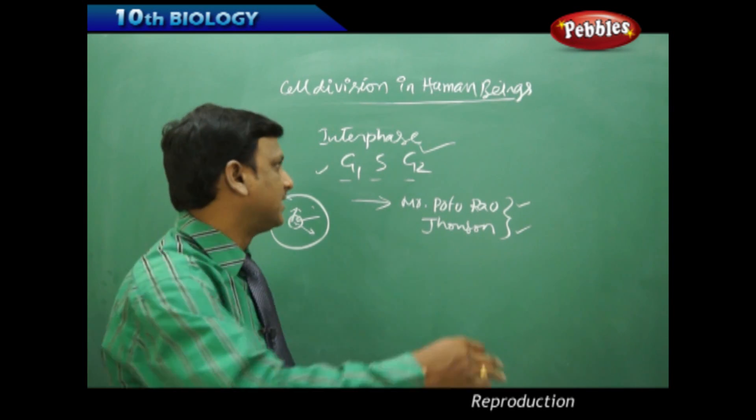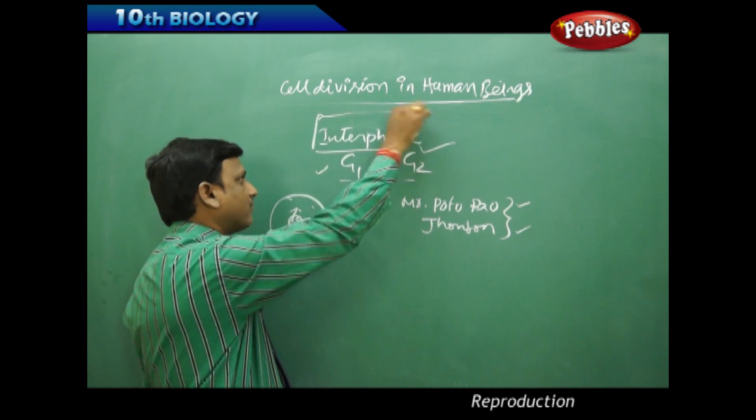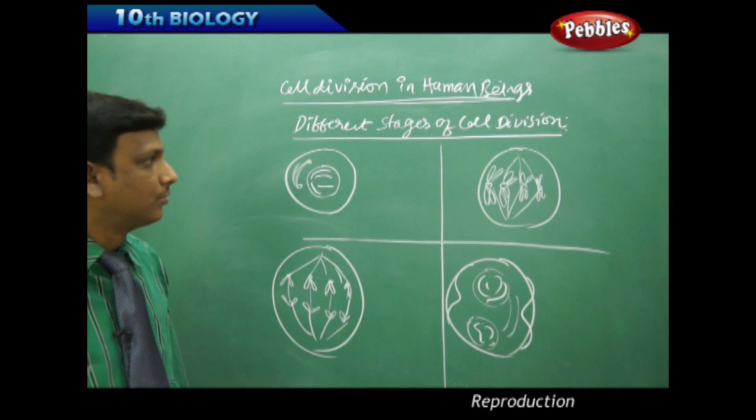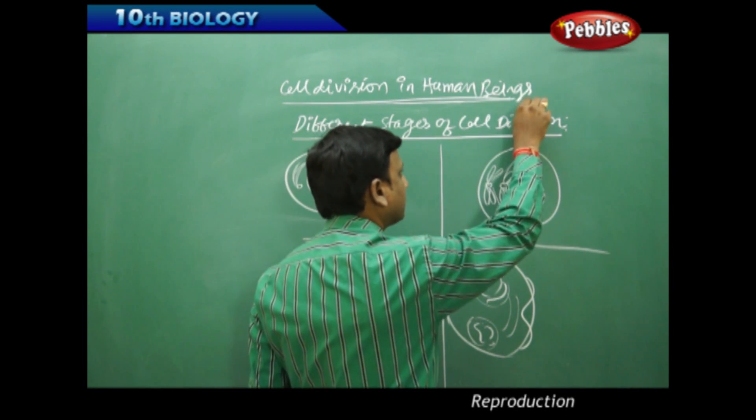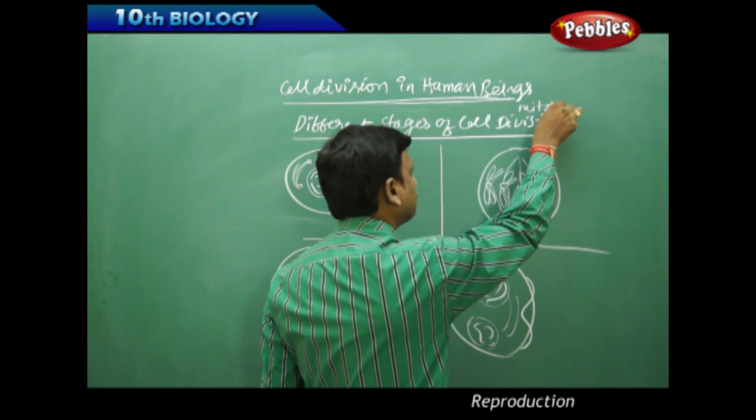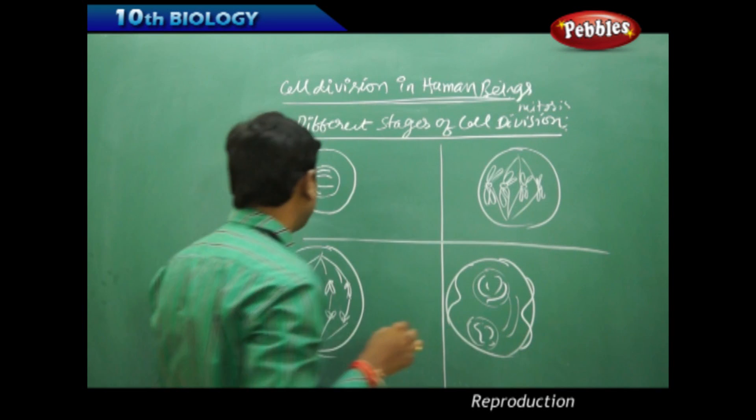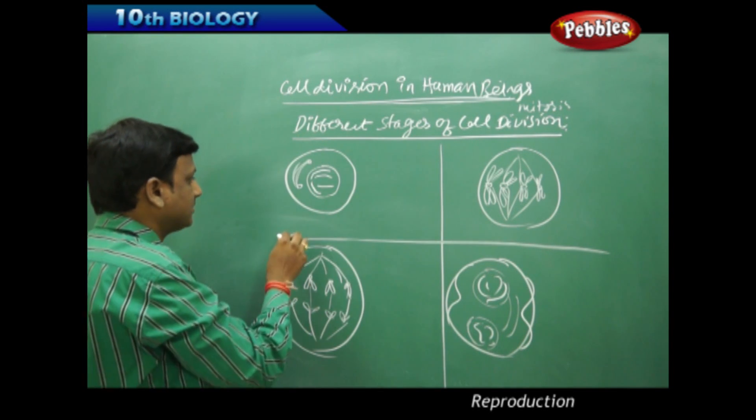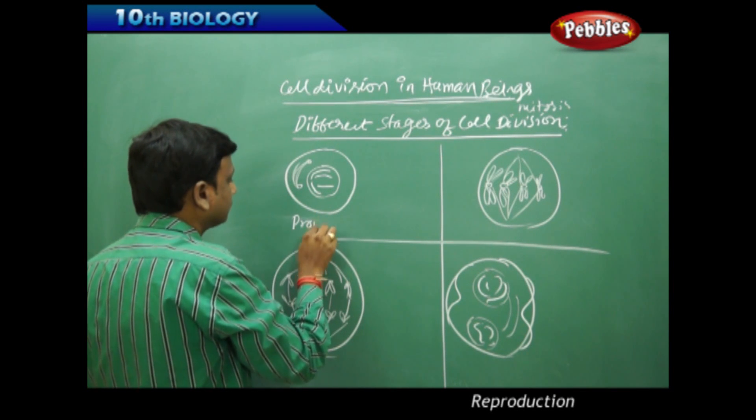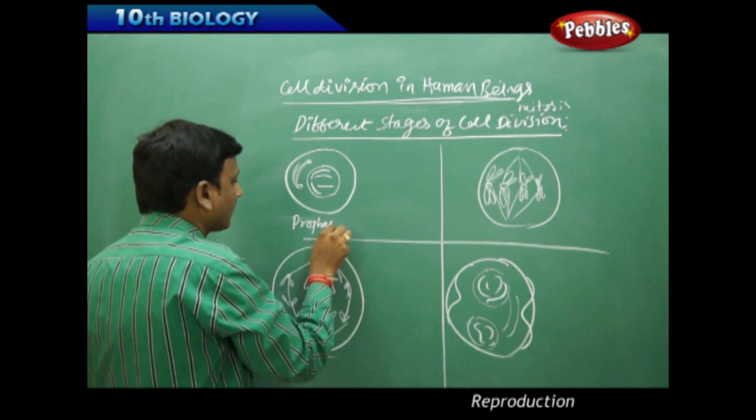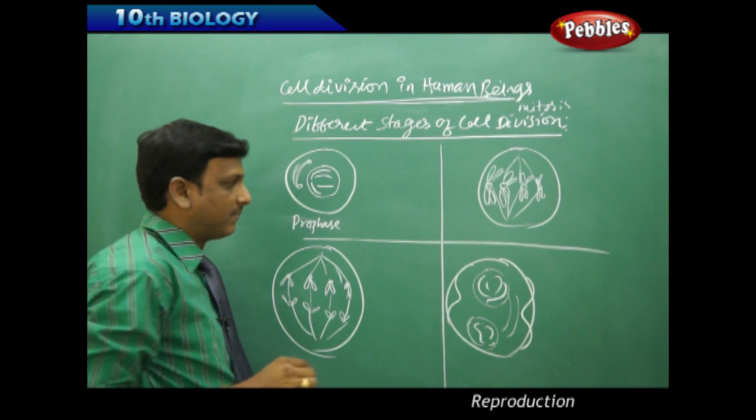Now let us look at the different stages of cell division, that is mitosis. There are four main phases which we observe in mitosis: prophase, metaphase, anaphase, and telophase.